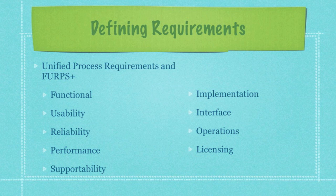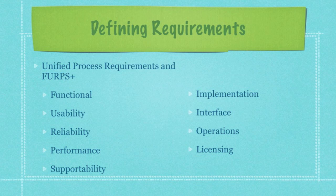FERPS breaks down into: Functional, which is going to be all your features and security; Usability, which are those parts of your system that are going to help your user directly; Reliability, which is how you're going to recover from failure; Performance, which is based on speed, accuracy, and proper resource usage; and Supportability, which shows how your system is going to be maintained as well as be configurable in the future. The plus side of FERPS includes four main parts: Implementation, where you list resource limitations and tools or languages you want to use; Interface, covering interfacing to external systems; Operations, covering system management; and finally, Licensing.